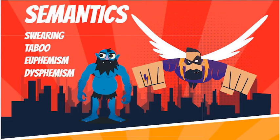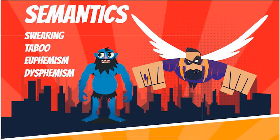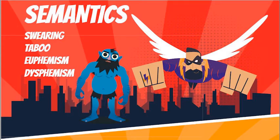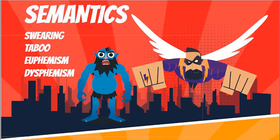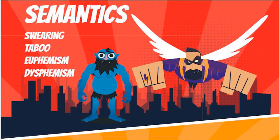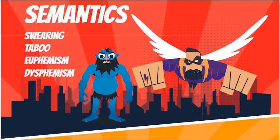Today we're going to cover some more semantics - the uses of swearing, the way that taboos are addressed, particularly with euphemism and dysphemism, and all within informal discourse. You've already covered some of this in lexicology and formal language, but it's important to understand how it functions slightly differently in informal language. The learning intention is to be able to explain why particular language choices within taboo fields are demonstrated to meet certain purposes and contexts.